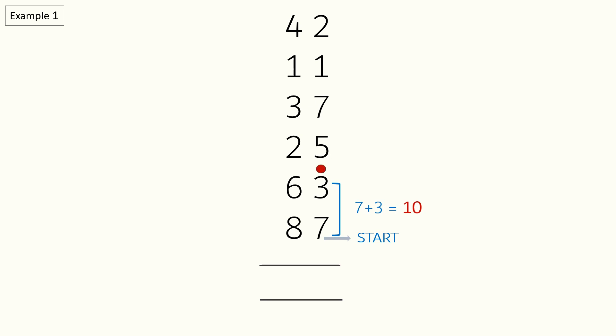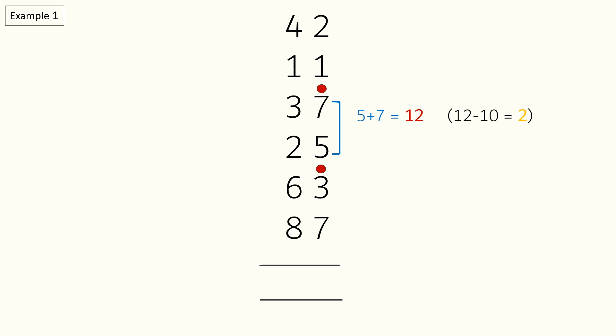Continuing to add: when we add 5 and 7 we get 12. Again we will stop here as we have reached 10. We will add a dot above 7 for the 10, and now we are left with a carry over of 2 for the next addition up to 10. We will start with the carry over 2 and add it to the rest of the digits.